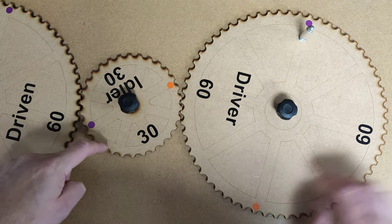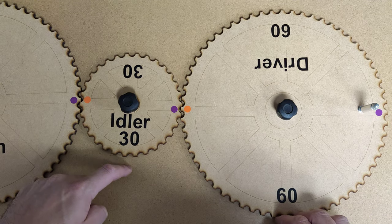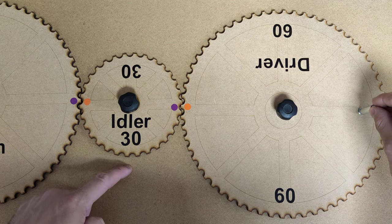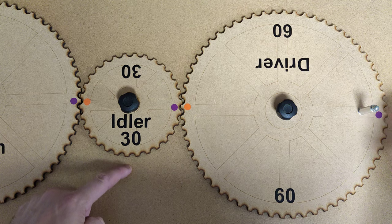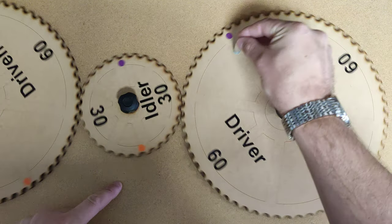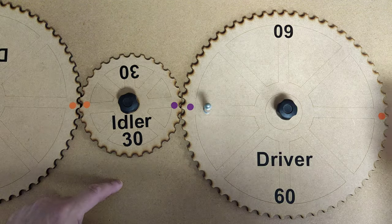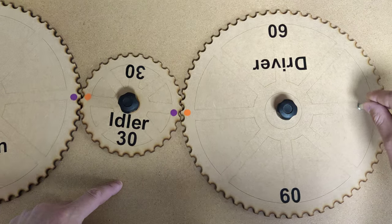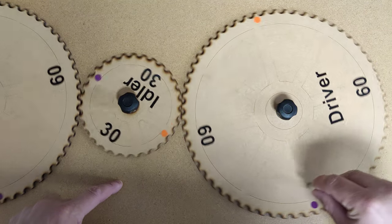But this one only went a half turn. So look where the metal spike is. Purple dots. Purple dot to purple dot, purple dot to orange dot. So it's kind of like a force times distance thing but it's with cogs.